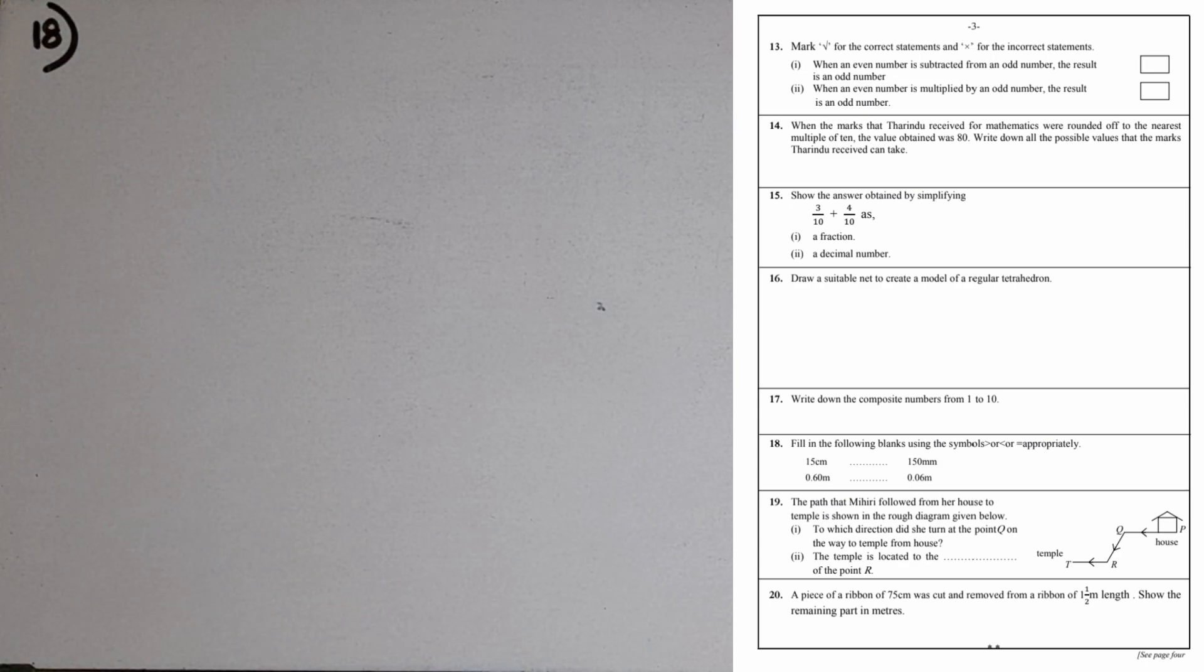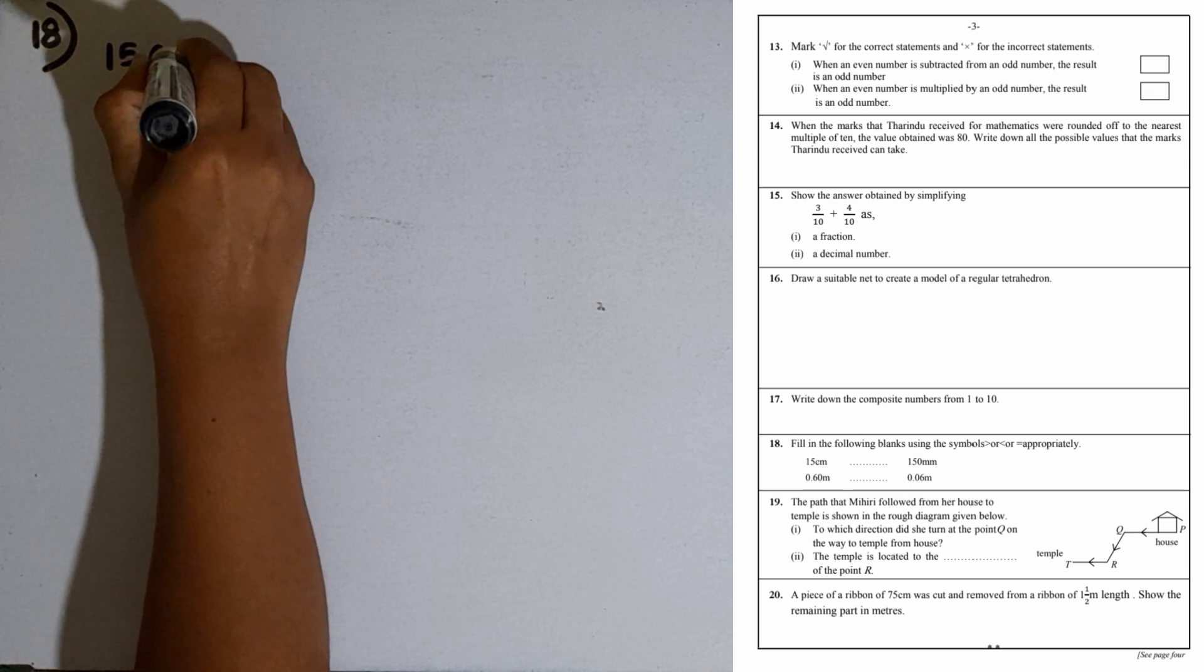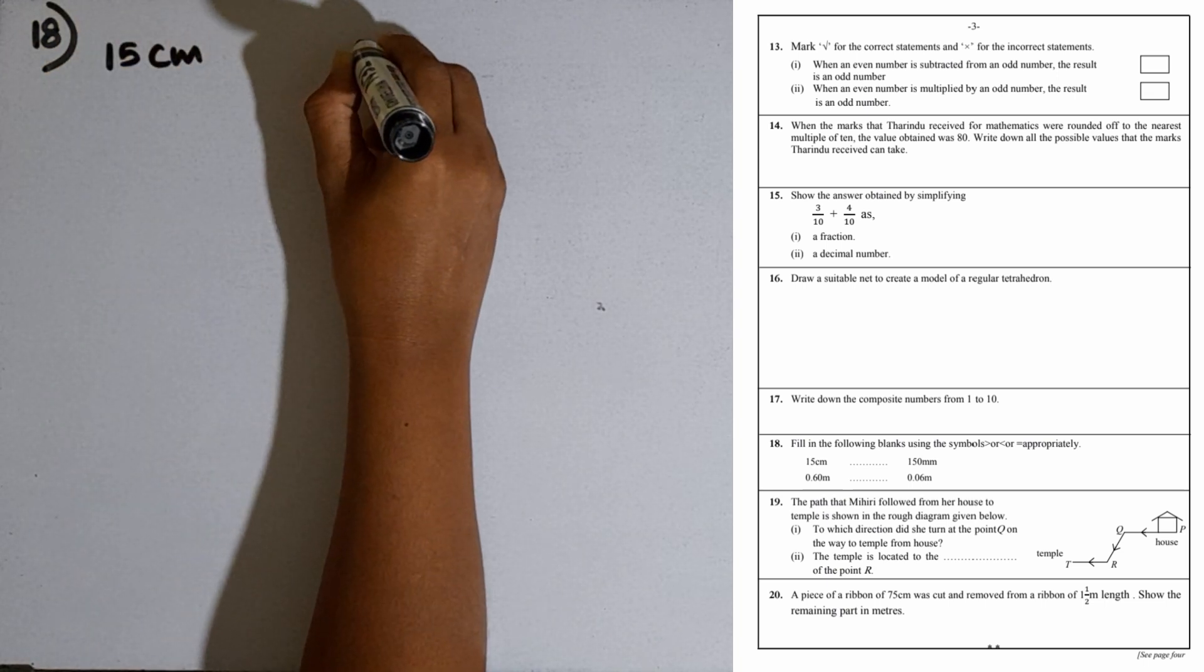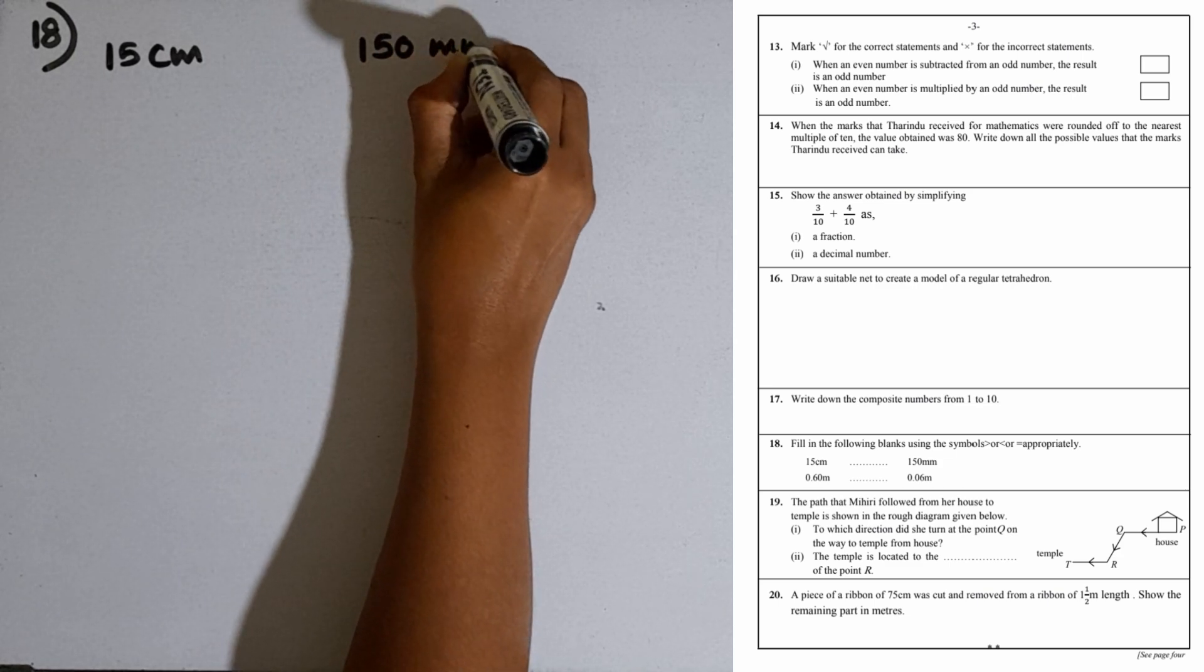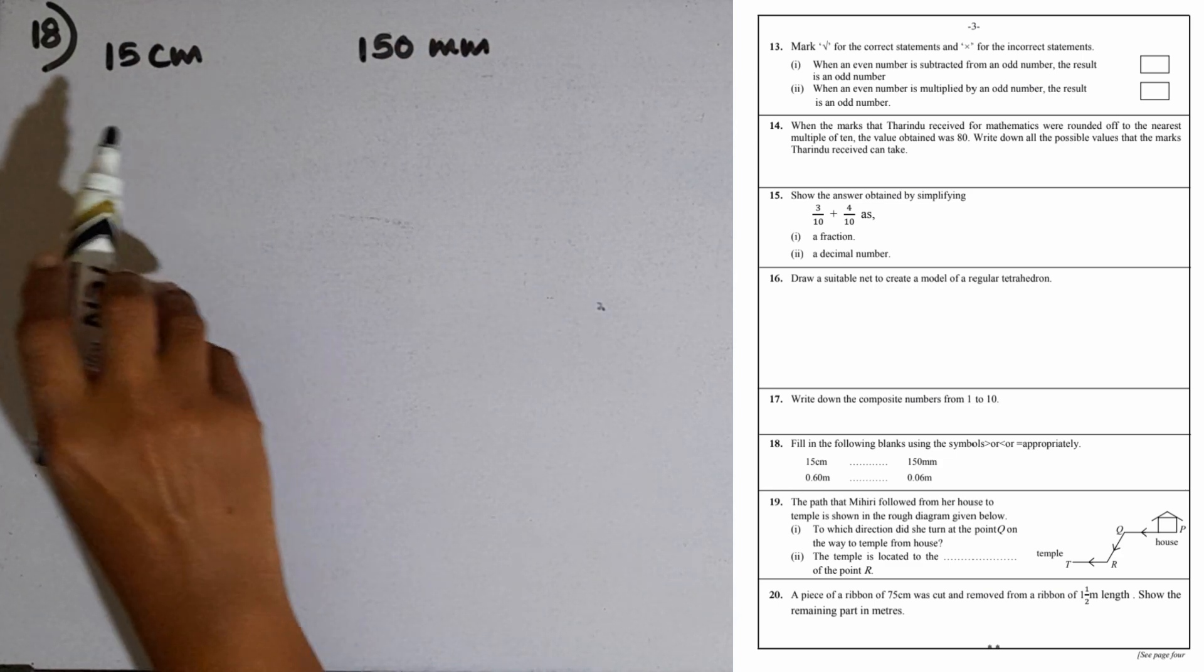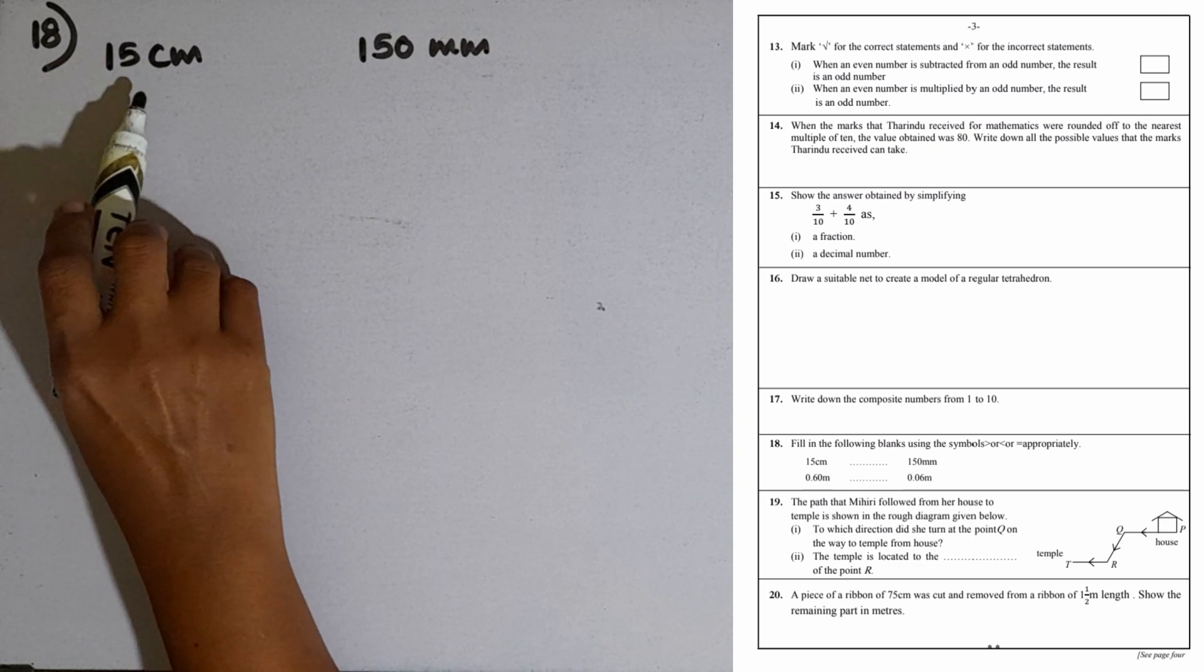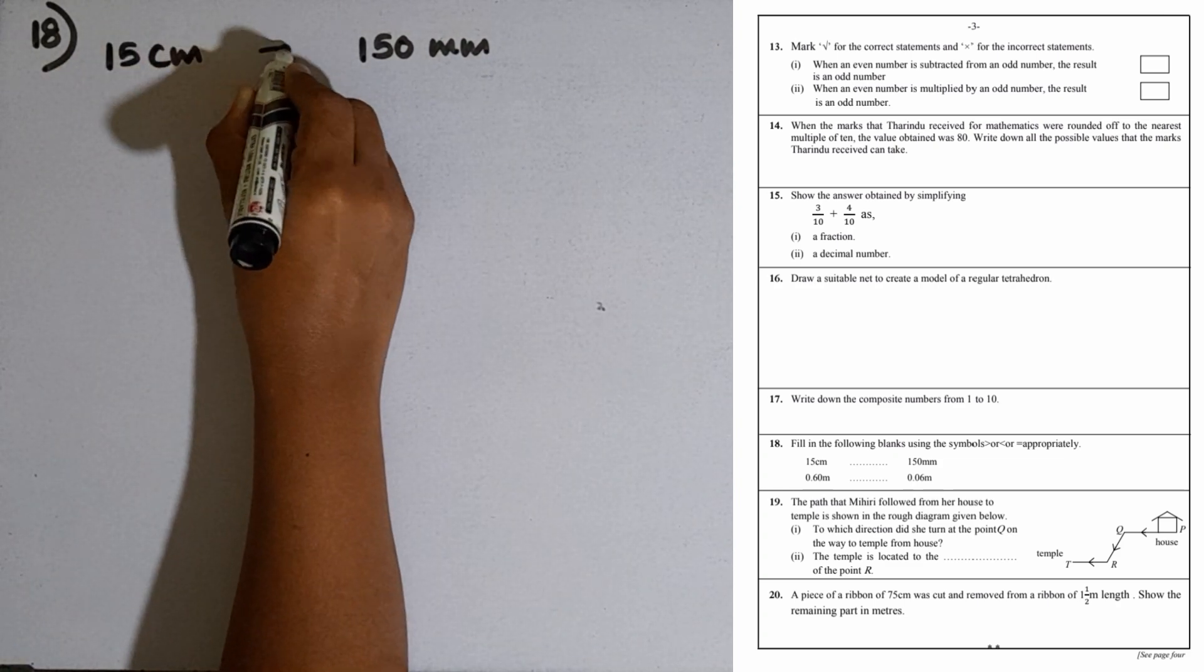Question number 18: Fill in the blanks using the symbols greater than, less than, or equal appropriately. First one, we are given 15 centimeters and 150 millimeters. 1 centimeter equals 10 millimeters, so 15 centimeters equals 150 millimeters. This is equal.